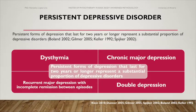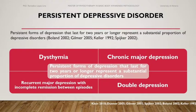Persistent forms of depression that last for two years or longer represent a substantial proportion of depressive disorders. Within the literature, four subtypes can be distinguished. First, dysthymia is defined as a condition with mild depressive symptoms persisting for at least two years. Second, chronic major depression is defined as a condition that meets the full criteria for major depression continuously for a minimum of two years.